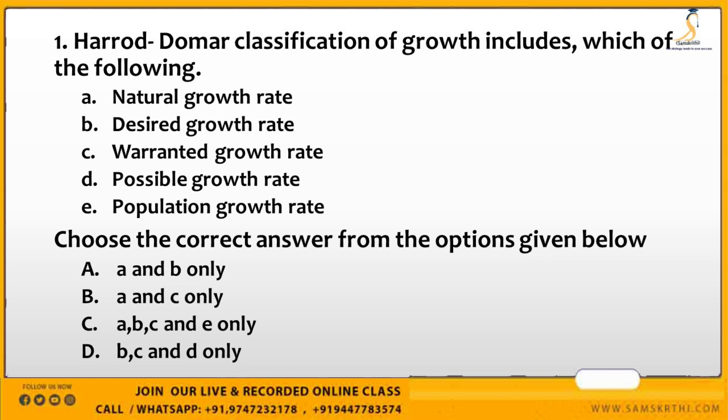Harrod-Domar classification of growth includes which of the following? The options include natural growth rate, desired growth rate, warranted growth rate, possible growth rate, and population growth rate.